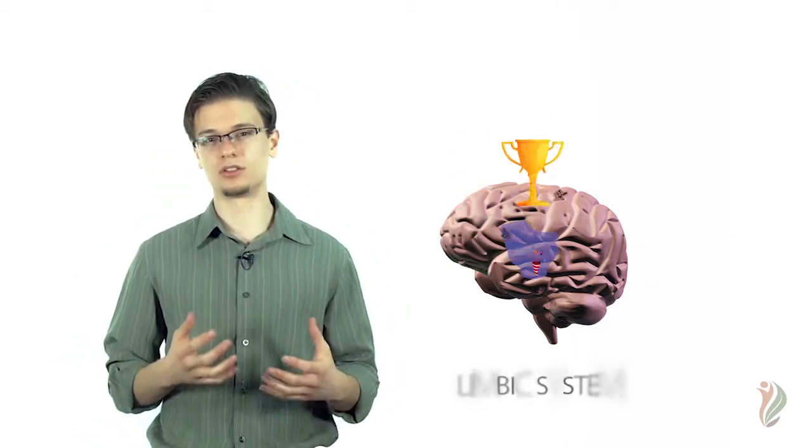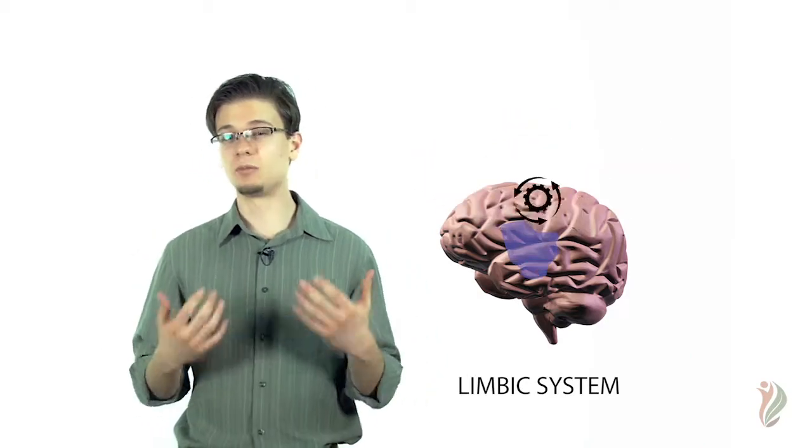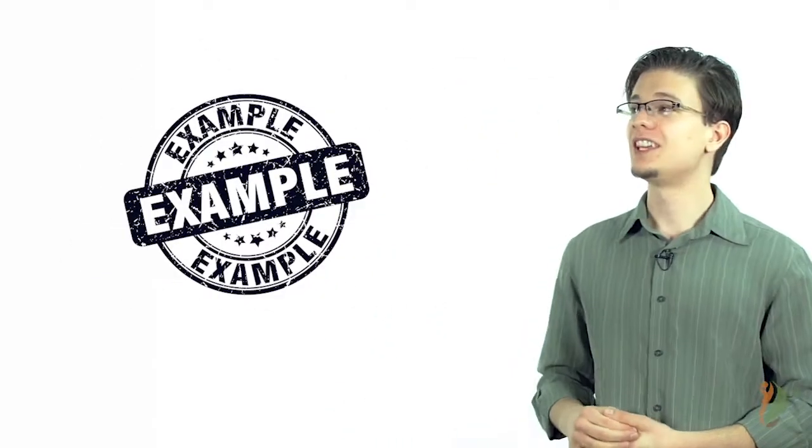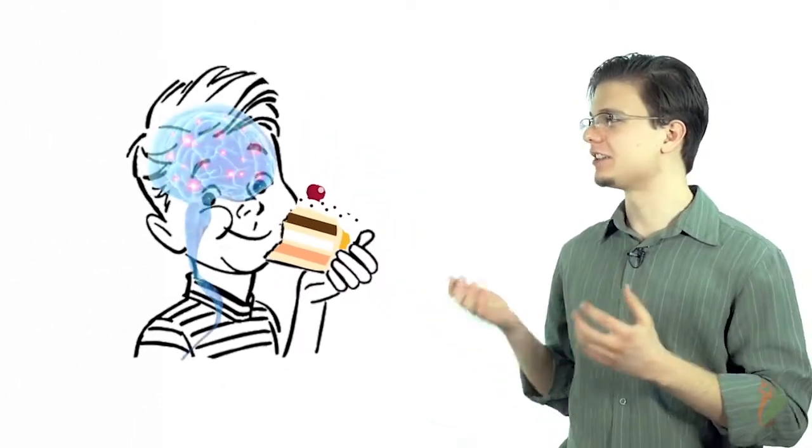The limbic system is the reward circuit of the brain. This is responsible for remembering a lot of pleasant experiences and reminding us that perhaps we could do it again. For example, if you were to eat cake for the very first time, your limbic system would undoubtedly say that cake is such a lovely experience and we should eat cake again sometime.